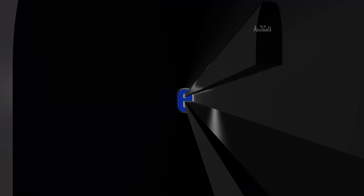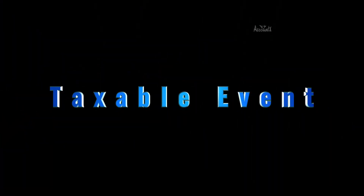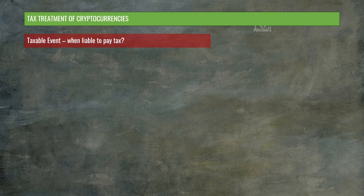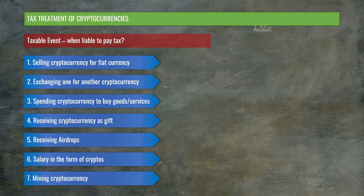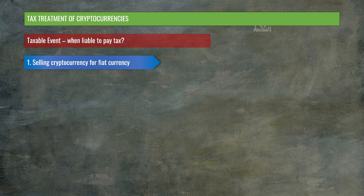Now that we have understood the meaning, let's talk about taxable events — that is, when you are liable to pay income tax. The first taxable event is selling cryptocurrencies for fiat currency. For instance, selling Bitcoin and receiving proceeds in INR. In this situation, you are liable to pay income tax.